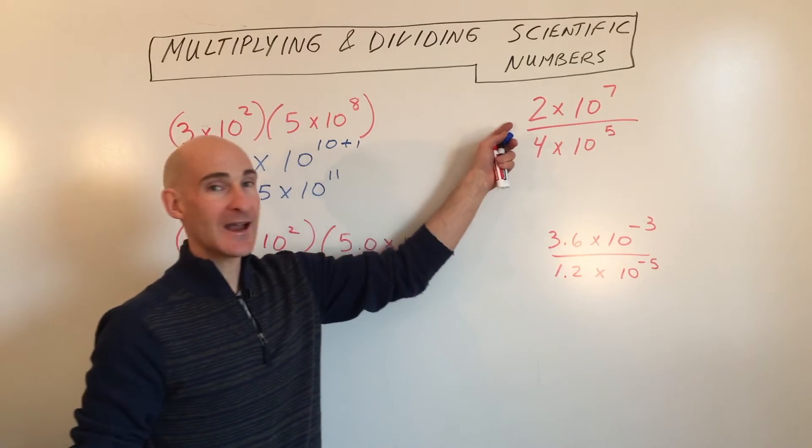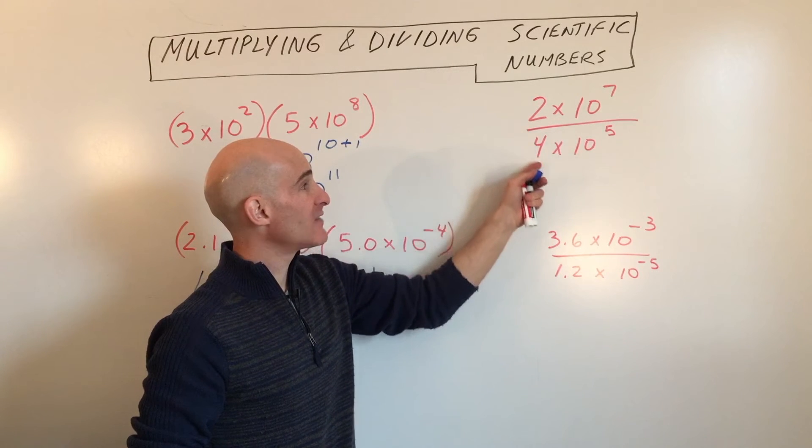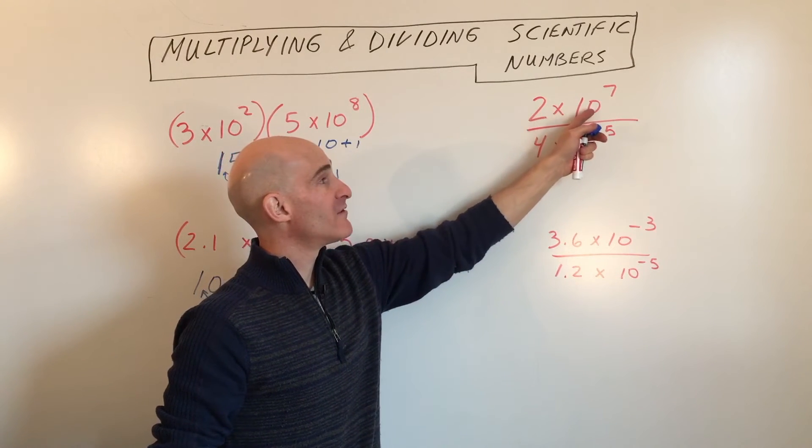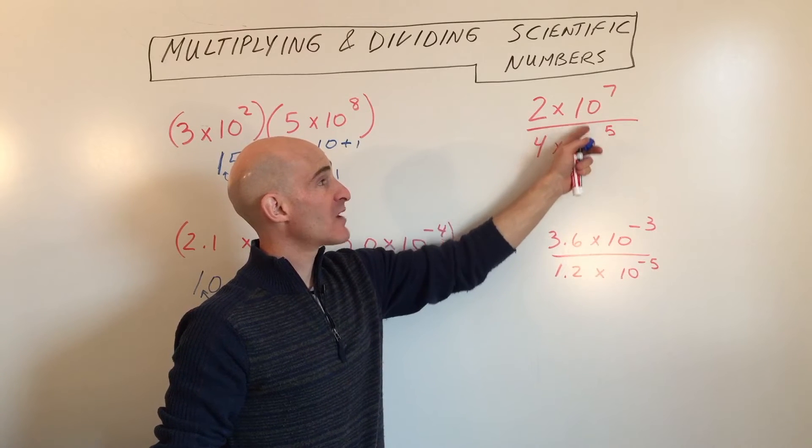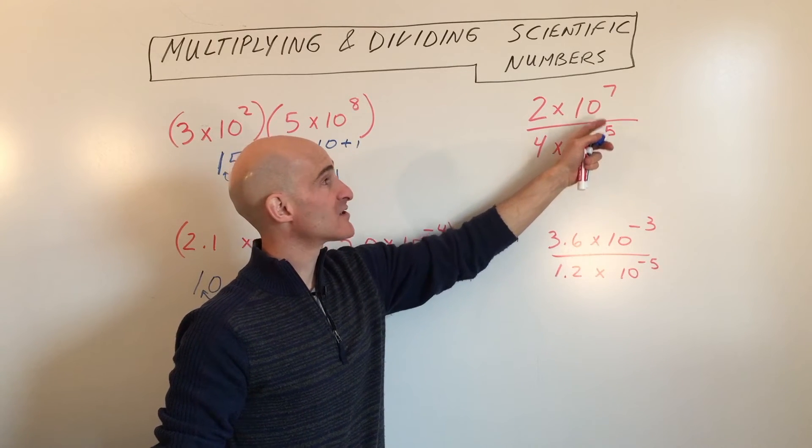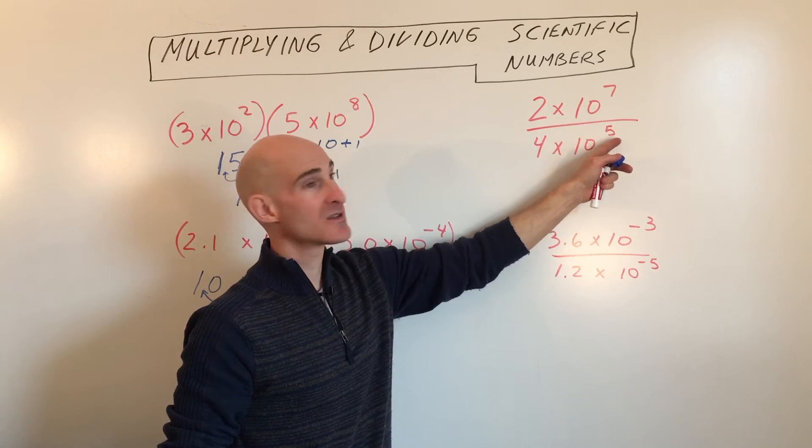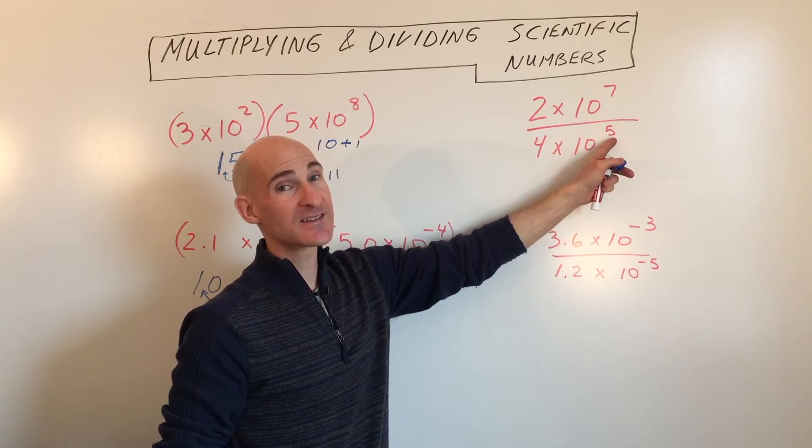Over here, now we're dividing. So when we divide, we divide these quantities. But when we divide the powers of 10, because we have the same base, the rules of exponents tell us that we subtract the exponents, the numerator's power minus the denominator's power.